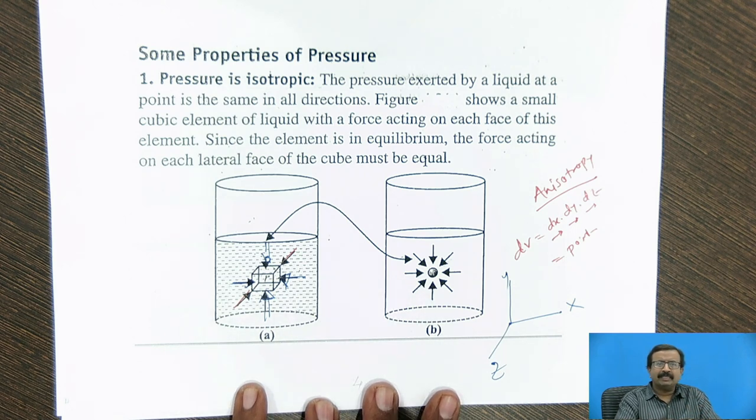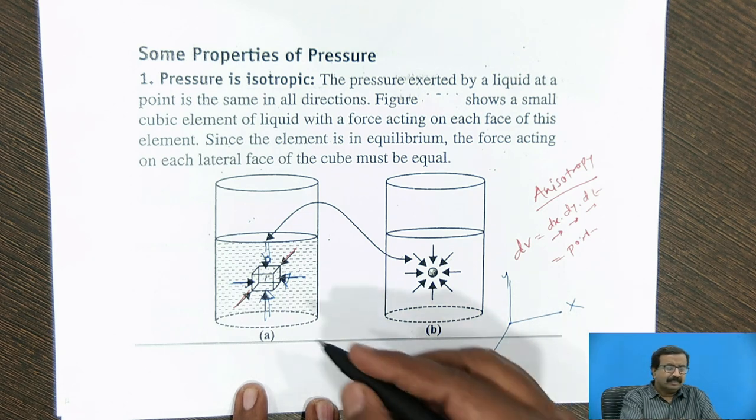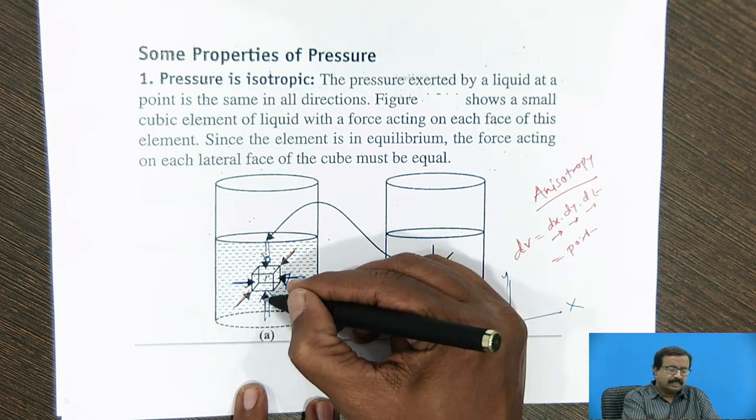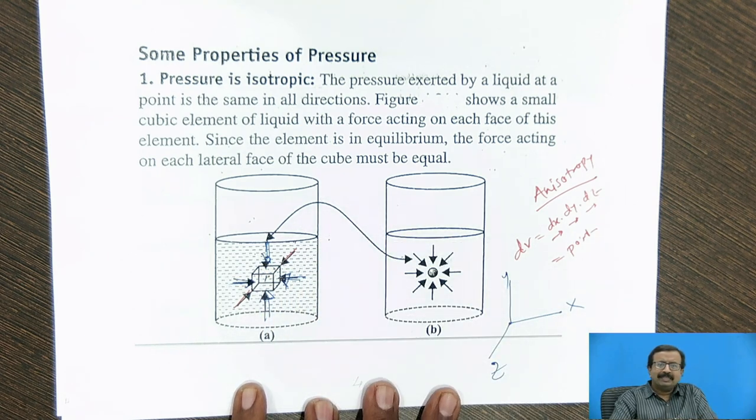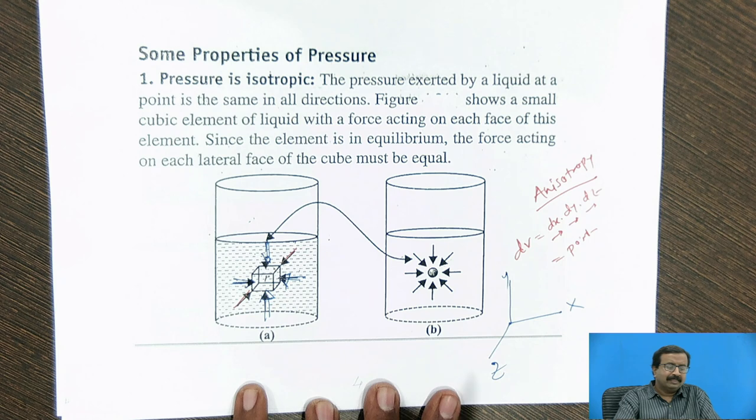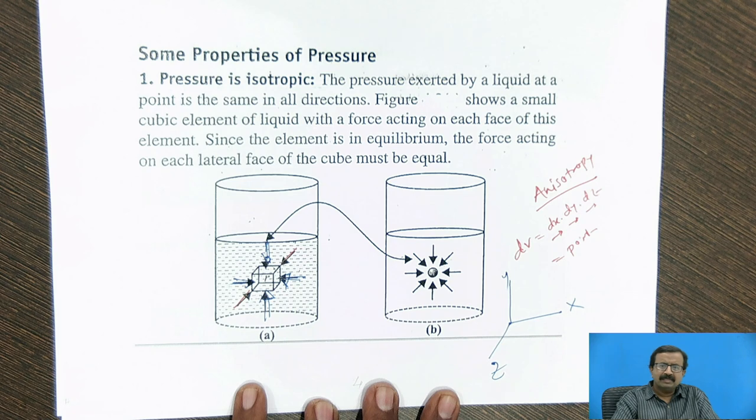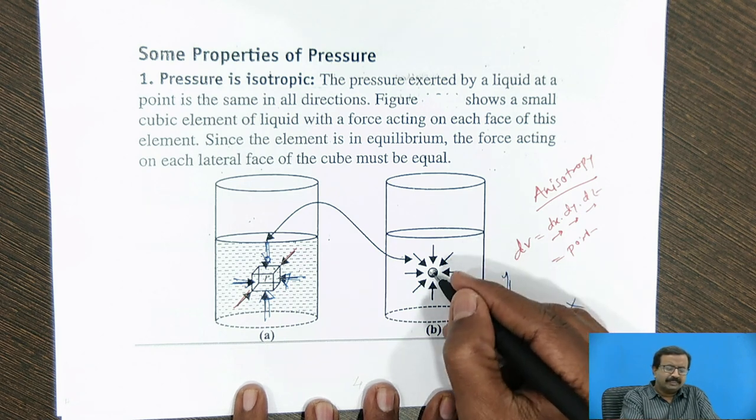So as my fluid particle is at rest, because I am interested in fluid statics, it is clear that this force and this force is same, this and this is same, this and this is same. So in a nutshell, what I can say that this elemental volume, if I compress it, it will become a point mass.